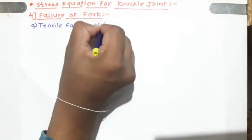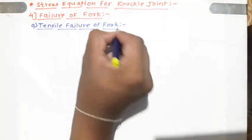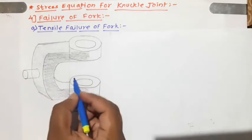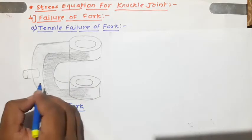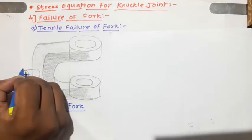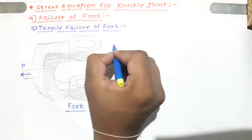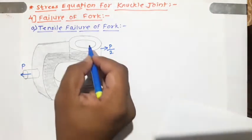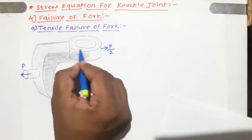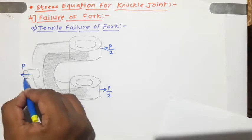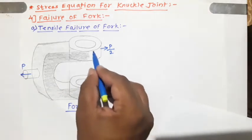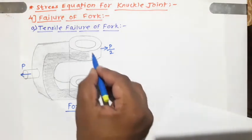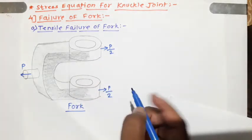Let us consider the diagram of the fork. As we have seen in the introductory lecture, this is the fork of the knuckle joint. In the free body diagram, we have seen that this fork is subjected to force P on the left-hand side and force P/2 on the right-hand side, as this fork has two ends similar to a hollow cylinder. The force P on the LHS must be balanced by the forces on the two fork ends, giving P/2 at each end — top and bottom.